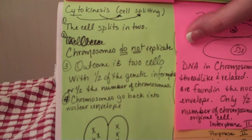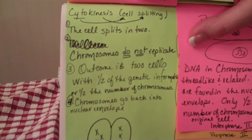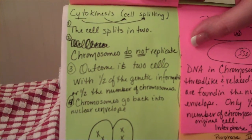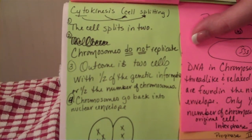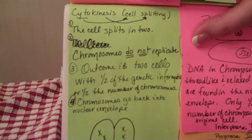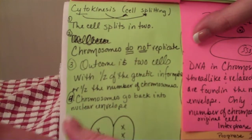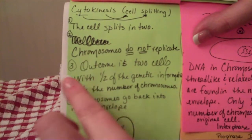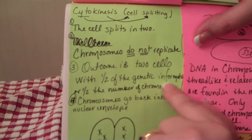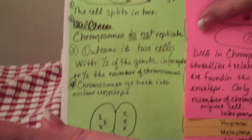Do you remember what that other process was that we talked about on page 53 in your notebook? Sounded like meiosis... and it is — Mitosis! So, the chromosomes do not replicate like they did in mitosis. The outcome is two cells with half of the genetic information, or half the number of chromosomes, from that parent cell.